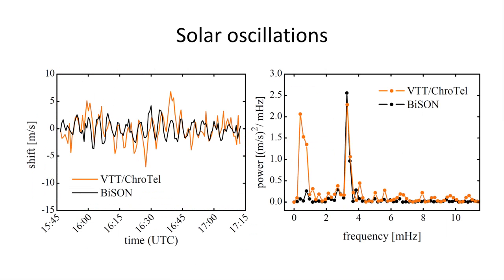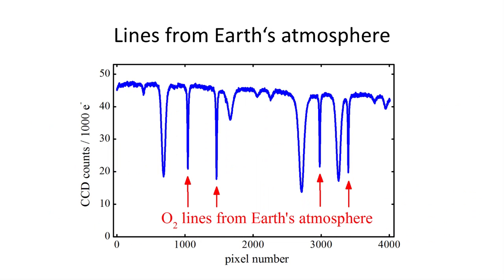We demonstrate our method by measuring global solar oscillations with a period of five minutes and compare our results to other measurements. The technique is also used to test the stability of absorption lines from Earth's atmosphere.